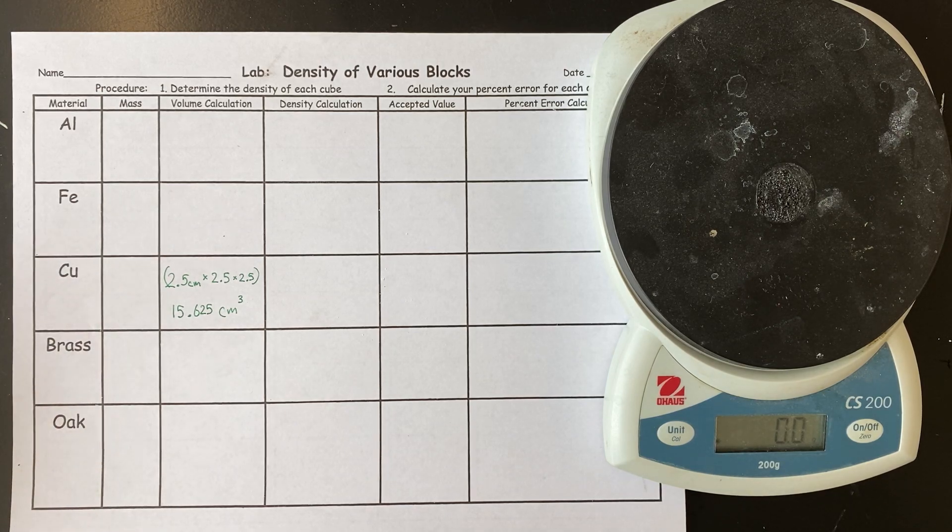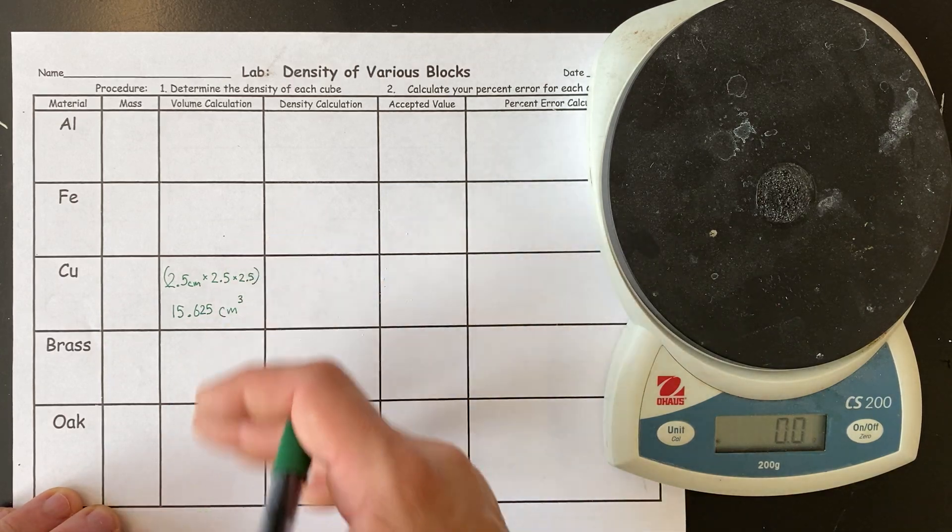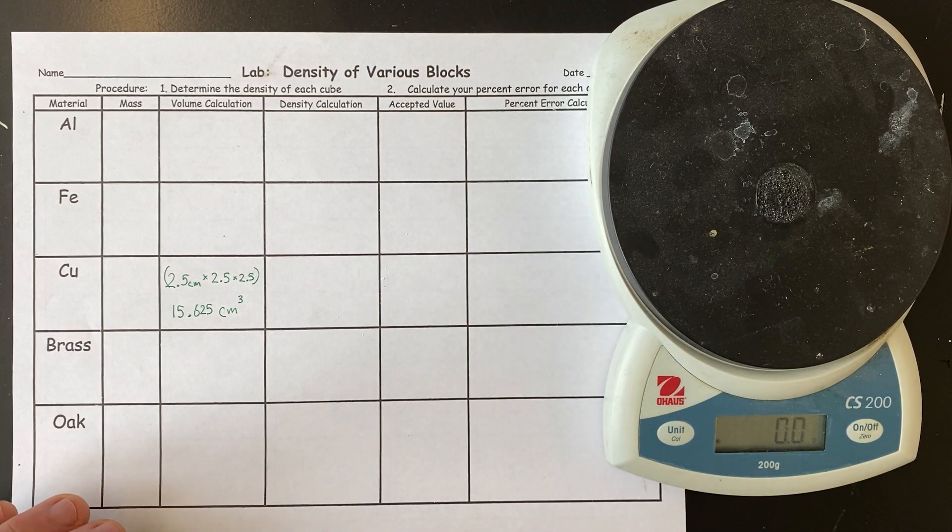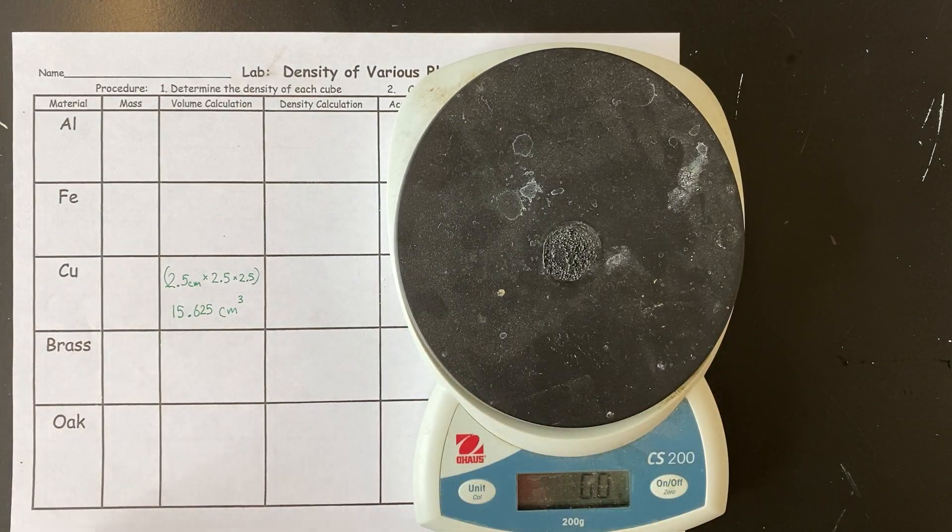So that's the volume for the cube. Now here's the nice thing. Because all the cubes are the same size, it's going to be the volume for every cube. So then the next thing you're going to need is we're going to need the masses of the cubes. So let's start at the top.